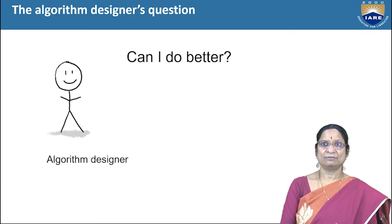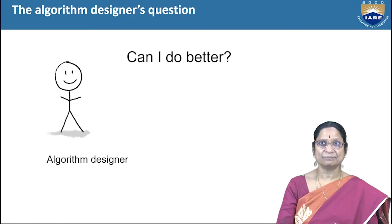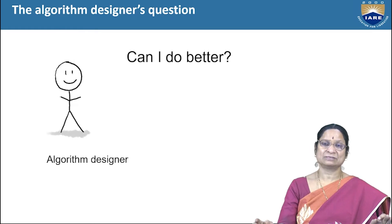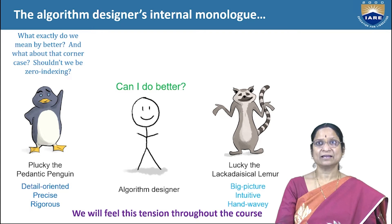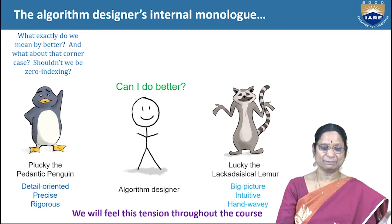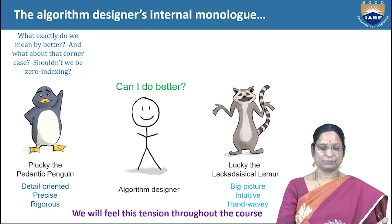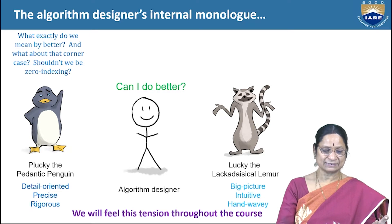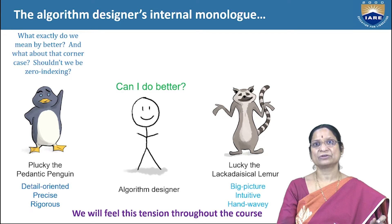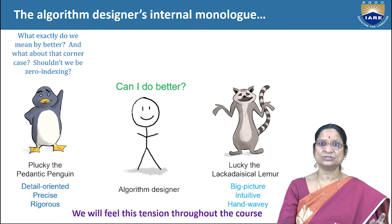Whenever an algorithm designer works, they always ask: how can I do this in a better way? This question must be in all our minds, because without it there is no improvement. What exactly do we mean by better? What about corner cases? Detail-oriented, precise, rigorous questioning is what we practice. Can I do it in a better way? That is always a question to check.